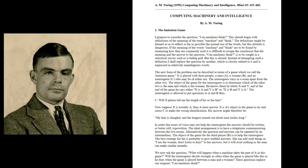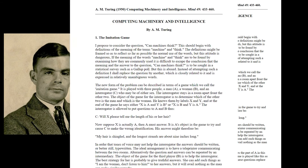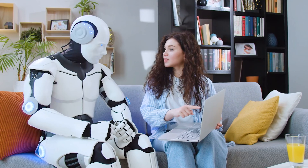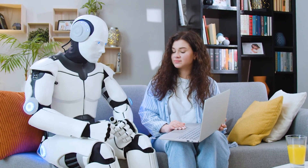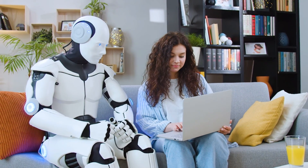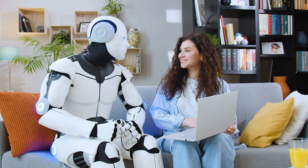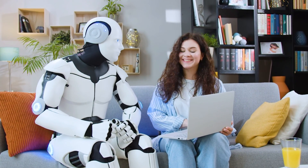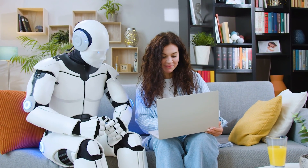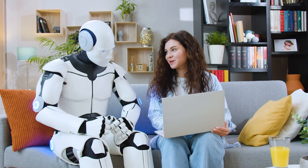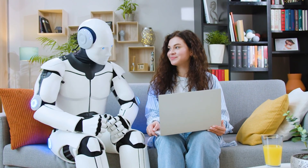In 1950, Alan Turing, one of the founders of AI, put forth the question 'Can Machines Think?' in his research paper, 'Computing, Machinery, and Intelligence.' In his paper, he argues that if a machine can have a conversation with a human and the human can't distinguish whether they are conversing with another human or with a machine, the machine has demonstrated human intelligence. This is also known as the Turing Test.